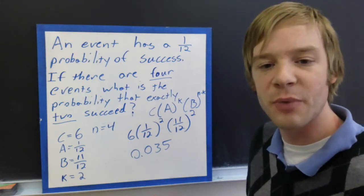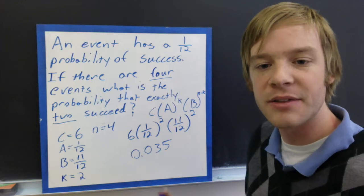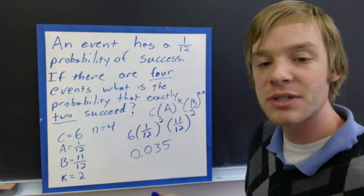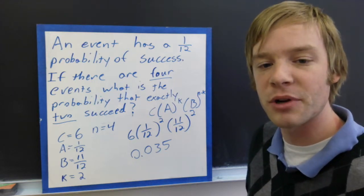So that means we've got about a 3.5% chance of getting exactly 2 successes when we have 4 possibilities total. So this is one type of problem that we can have right here. Now, this is not the only type of problem. So let's take a look at the second type of problem that we're going to look at today.